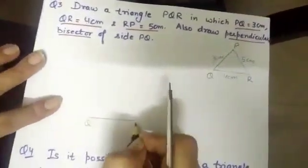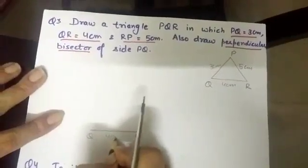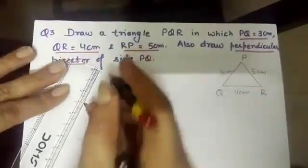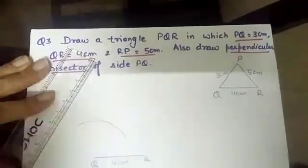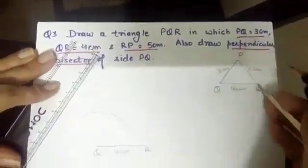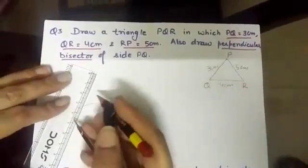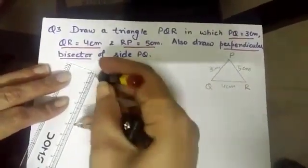Now, QR, I have already taken as base, 4 cm. Now, this side is PQ. So open your compass 3 cm with the help of ruler. Taking Q as a center, draw the arc.